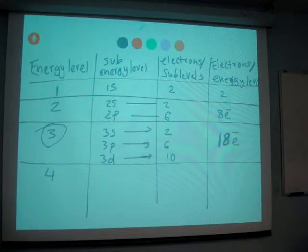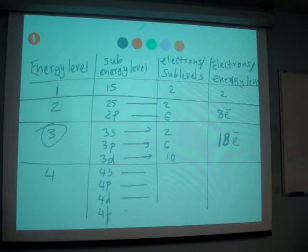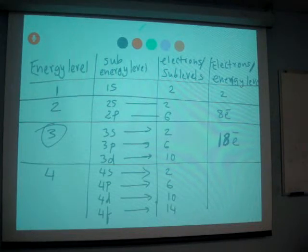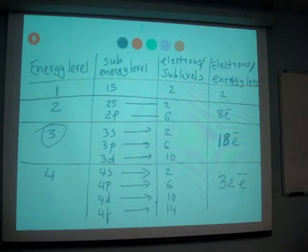Energy level 4, we have 4s, 4p, 4d and 4f, those sub levels and their capacities. S level is always 2, p level maximum capacity 6, d is 10 and f is 14. When you add these, total capacity for energy level 4 is 32. So that's where you can count maximum capacity per energy level.